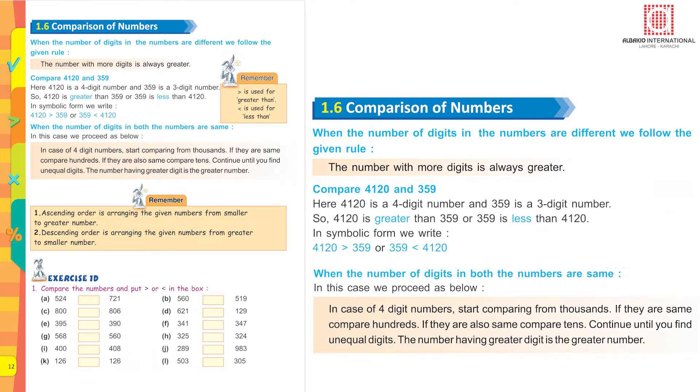When the number of digits in both the numbers are same, in this case we proceed as follows: In case of four-digit numbers, start comparing from thousands. If they are the same, compare hundreds. If they are also same, compare tens. Continue until you find unequal digits. The number having greater digit is the greater number.